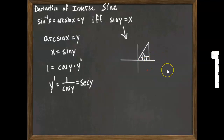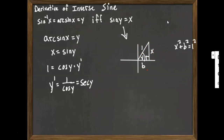Since sine of y equals x, and we know sine is the opposite side over the hypotenuse, the opposite side must be x and the hypotenuse must be 1. To find cosine, we need the adjacent side — let's call it b. Since we know two sides of our right triangle, by the Pythagorean theorem: x squared plus b squared equals the square of the hypotenuse. Solving for b: we bring x squared to the other side, apply the square root, and get b equals the square root of 1 minus x squared. Because that is a positive side, we take the positive square root.